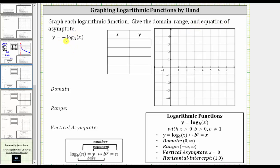We are given y equals negative log base three of x. Notice how except for the negative sign here, this log function does fit the form of y equals log base b of x, where we should recognize the domain is the open interval from zero to infinity, the range is the open interval from negative infinity to positive infinity, and the vertical asymptote is x equals zero.